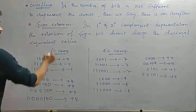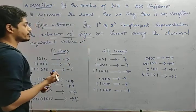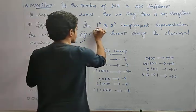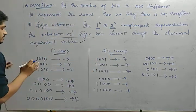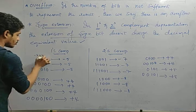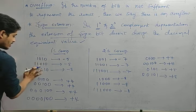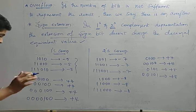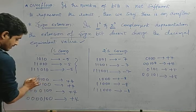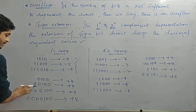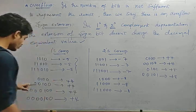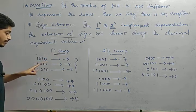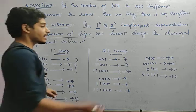In 1s and 2s complement representation, the extension of the sign bit does not change the decimal equivalent value. This applies in 1s and 2s complement only, not in sign-magnitude form. For example, in 1s complement, 1010 is minus 5 (minus 7 plus 2). If you keep on increasing 1s in the MSB, the value won't change. But if you keep 0 there, the value changes. For positive numbers, if you keep adding 0s, there is no change.